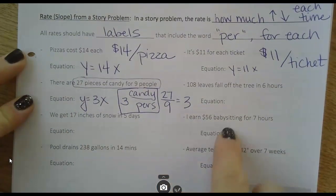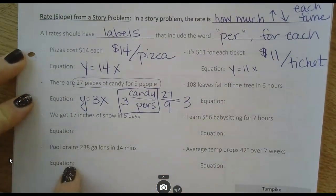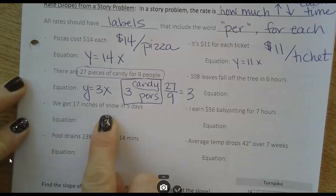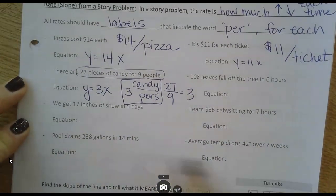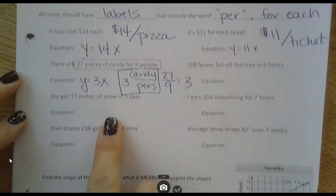There are a couple more here. I want you to try those, so pause now. And then just check that you have the correct rate and equation for each one. There's 5 more here for you to try right now. So pause and do those.